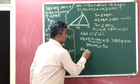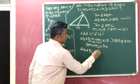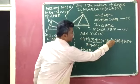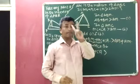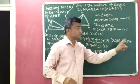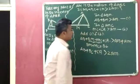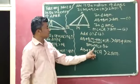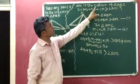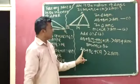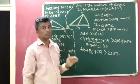So AB plus BM plus MC plus CA becomes AB plus BC plus CA, which is greater than 2AM. We have proved that AB plus BC plus CA is greater than 2AM.